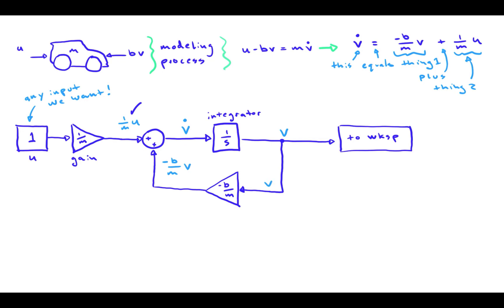To address the negative sign, you can either use a gain of -b/m, or you can simply change the sign in the summing junction to a negative value. Just make sure you don't do both, otherwise you'll end up with a double negative.